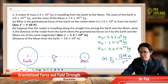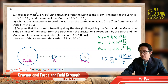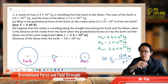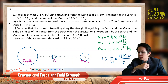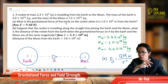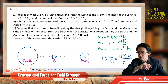Hi, now let us discuss about gravitational force and field strength. Let us read this question. A rocket of mass 2.4×10⁴ kilogram is traveling from the Earth to the Moon. The mass of the Earth is 6×10²⁴ kilogram and the mass of the Moon is 7.4×10²² kilogram. What is the gravitational force of the Earth on the rocket when it is 1×10⁹ meter from the Earth?